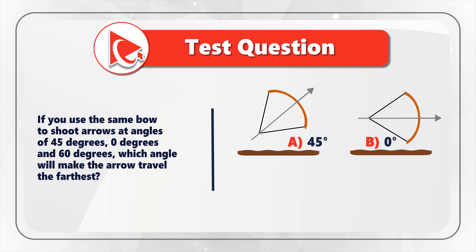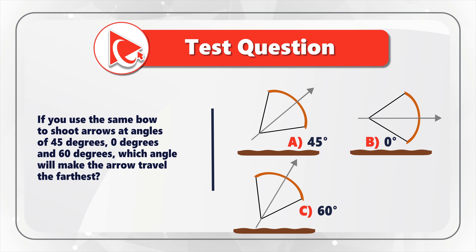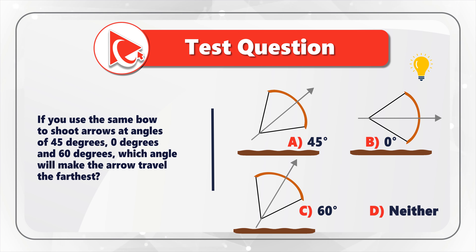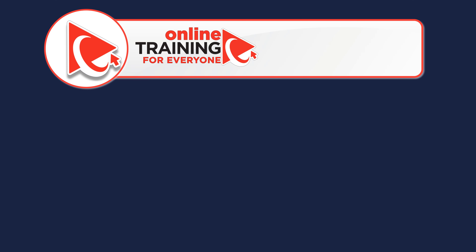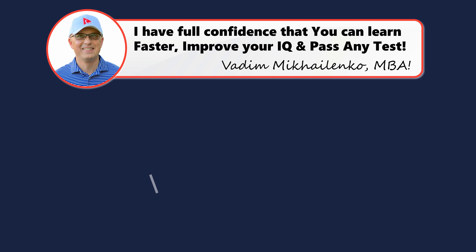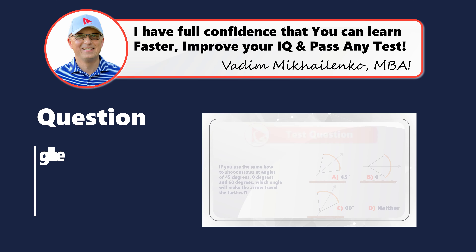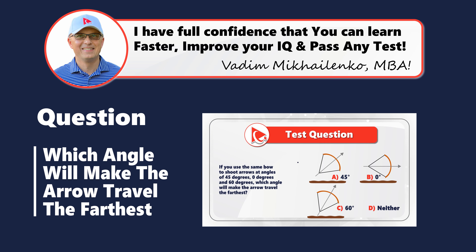Choice C: 60 degrees. And last but not least, Choice D: neither one. Take a close look to see if you can come up with the answer. On my end, I am moving forward to share with you my version of the analysis and answer.